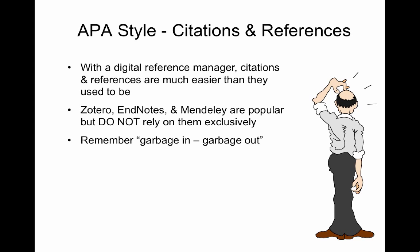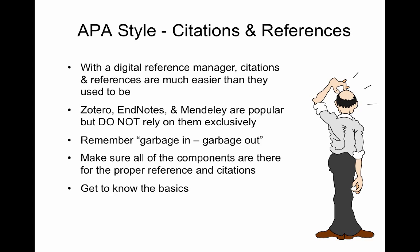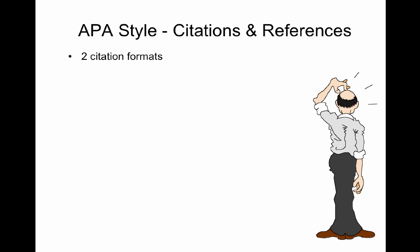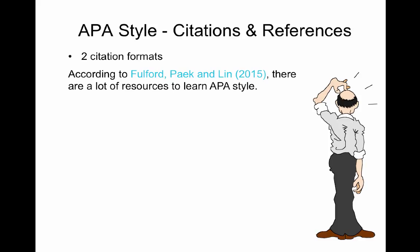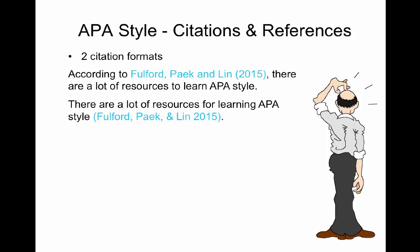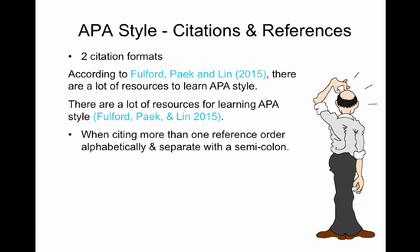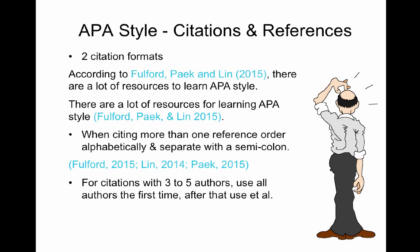Get to know the basics. There are two citation formats. For example, according to Fulford, Peck and Lynn (2015), there are a lot of resources to learn APA style. Notice that in a full sentence style, we use the word and, and the date is in parentheses. When there's no name used in the citation, it's at the end of the sentence and we use an ampersand, and a period is after the parentheses. When citing more than one reference, order it alphabetically and separate with a semicolon. For citations with three to five authors, use all authors the first time and after that use et al. With six or more authors, always use et al.